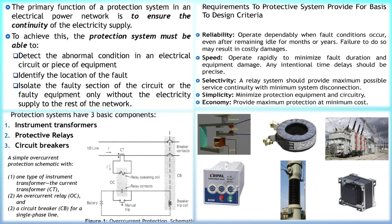The primary winding of a current transformer CT is connected in series with the line. The secondary winding of the CT is connected in series with the relay operating coil. The tripping circuit, which may be either an AC or DC source of supply, has the trip coil of the circuit breaker and relay stationary contacts connected in series.